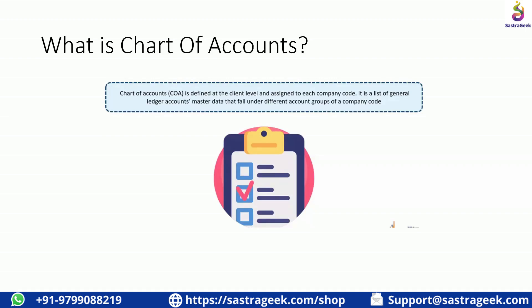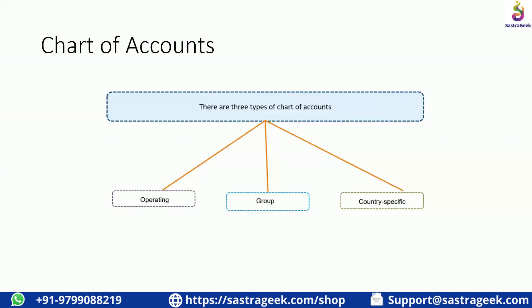For example, all the GL groups and general ledgers that we require will be created under one variant. There are three different types of Chart of Accounts: one is Operating, the other one is Group, and the next one is Country-Specific. Operating is your working Chart of Accounts — whatever work you're trying to do, those related accounts are the immediate Chart of Accounts.